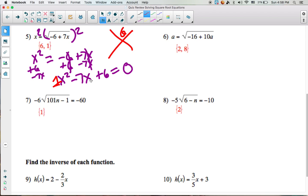Put the negative 7 on the bottom. We ask ourselves, what are two numbers that multiply to give us 6, but when we add, we get negative 7?